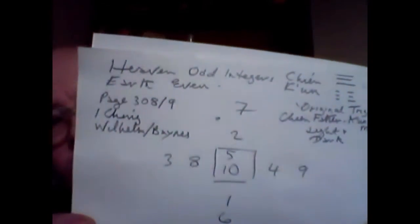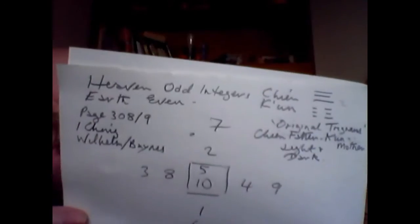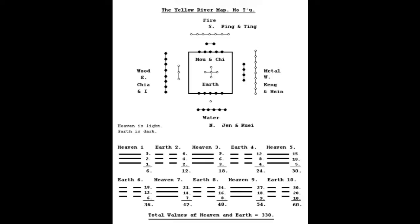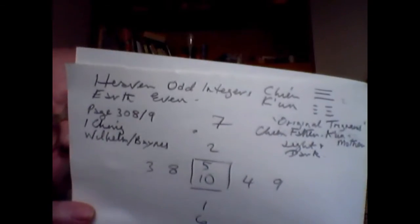The values of Heaven and Earth run from 1 to 10. Heaven, or the Trigram Chen, is always odd values, and Earth 1 to 10 is always even values. So we have them as odd and even integers from the Chen and the original Trigrams.